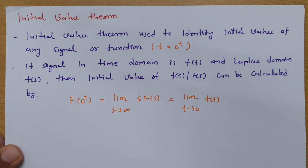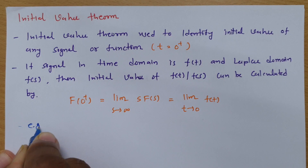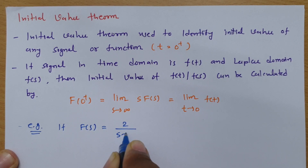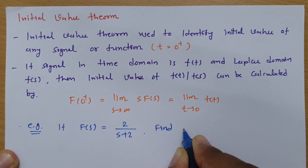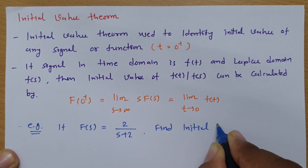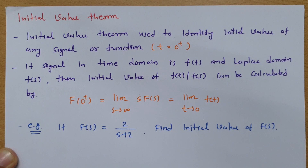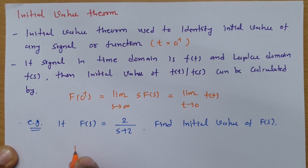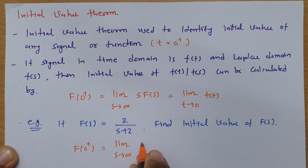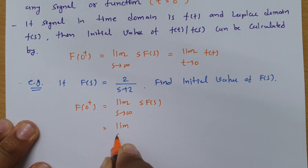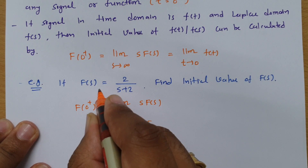Let us look at an example to make this clearer. Given f(s) in the Laplace domain as 2 divided by (s + 2), the question is to find the initial value. Applying the initial value theorem, we compute limit as s tends to infinity of s·f(s), which is s multiplied by 2 divided by (s + 2).